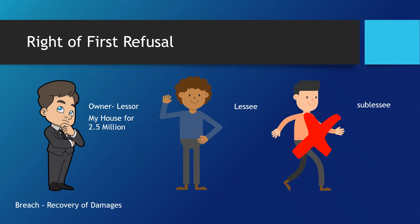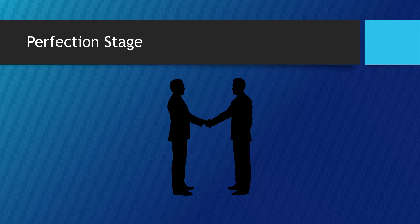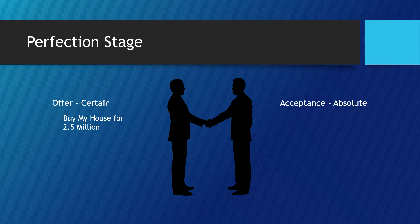After Policitation or Negotiation is the perfection stage, which is the meeting of the minds upon the object and upon the price of the contract. Being a state of mind, mutual consent may only be inferred from the confluence of two acts of the parties: first, an offer certain as to the object of the contract and its consideration; and second, an acceptance of the offer which is absolute, meaning it refers to the exact object and consideration embodied in the said offer.